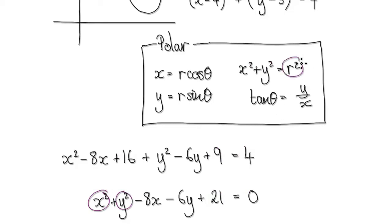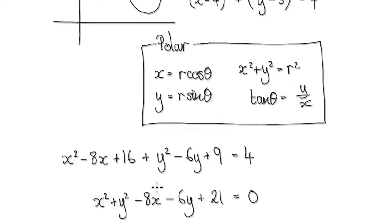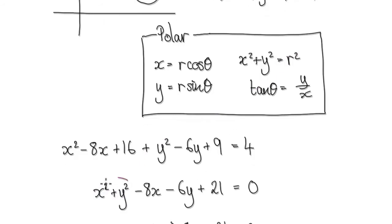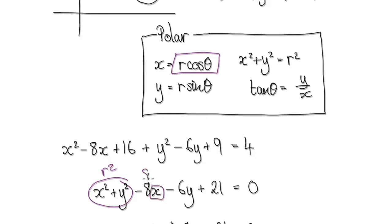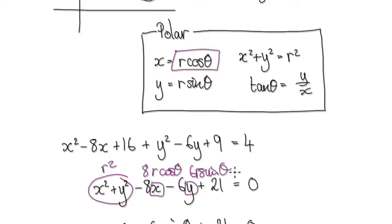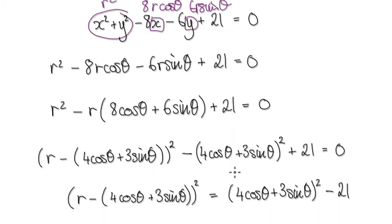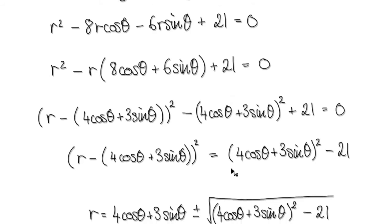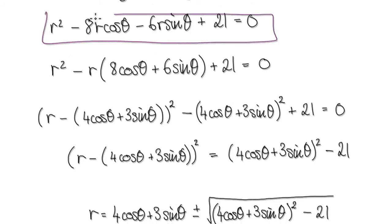When converting into polar form, always look out for x² + y², which you can replace with r². So x² + y² becomes r². And x is r cosθ, so the -8x term becomes -8r cosθ. And y is r sinθ, so the -6y term becomes -6r sinθ. That gives us r² - 8r cosθ - 6r sinθ - 21 = 0.